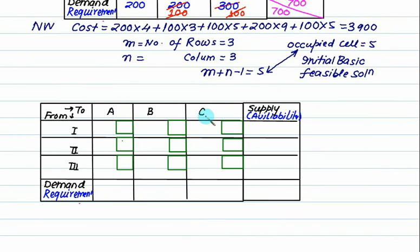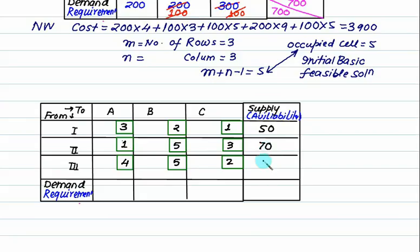Let's take another example. A, B, C are the 3 warehouses and 1, 2, 3 are the 3 factories. The costs involved are given. The atoms produced are 50, 70, and 90 — unit 1 producing 50, unit 2 producing 70, and unit 3 producing 90. The requirement is 40.